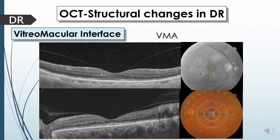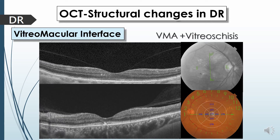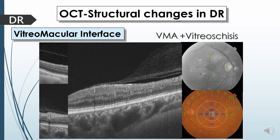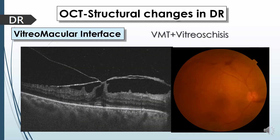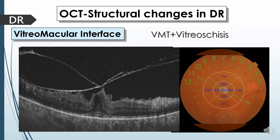One of the main functions of OCT is evaluation of the vitreo-macular interface in diabetic patients. We can differentiate between vitreo-macular adhesions and epiretinal membranes. Vitreo-macular adhesion is caused by partial PVD sometimes associated with splitting in the posterior cortex of the vitreous. Epiretinal membranes appear as a hyperreflective layer that causes traction and distortion of the vitreo-macular interface and may cause diffuse macular thickening and elevation of the fovea, as well as anteroposterior traction causing distortion of the foveal architecture.